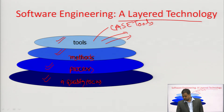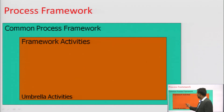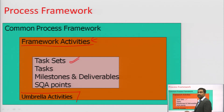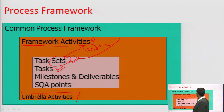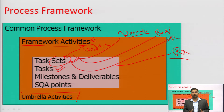Now let's look at process frameworks. What we've studied so far: what processes exist, what the layered approach is. A common process framework defines what basic things are required. Task sets — what tasks need to be completed, what has been completed, what is remaining. Different teams have different task sets: testing team, development team, requirement team are all separate.